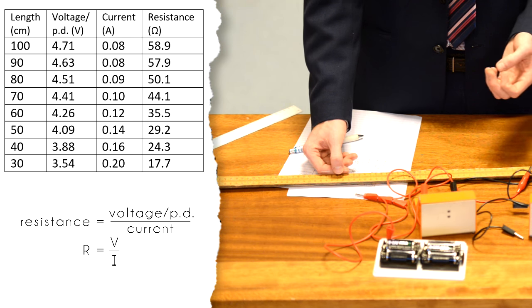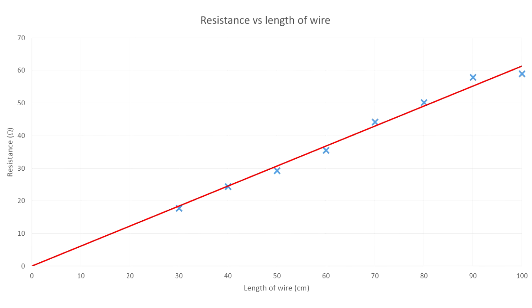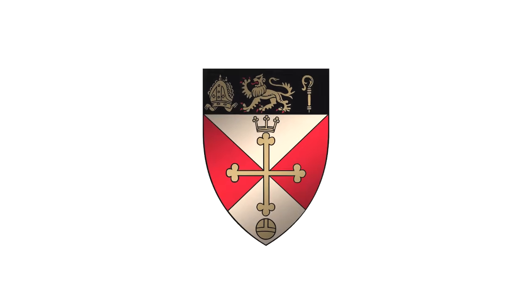So having plotted the resistance on the y-axis, length on the x-axis, we draw a line of best fit through the middle of those points. Ideally it should be a straight line of best fit with a positive gradient. Ideally it should go through the origin through zero zero.